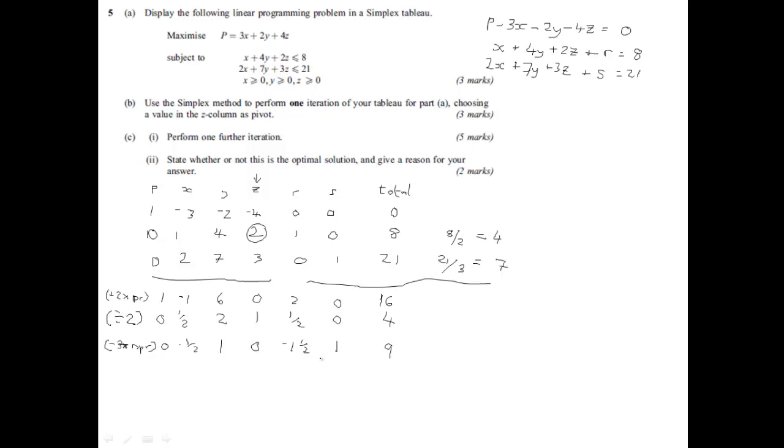So we've now secured 6 marks. It then says perform one further iteration. Well, we can see from looking at the objective function line that we need to do that because we have a negative here in the x column. So that means that we have to perform another iteration using the x column. It's the only negative value in the objective function line. We do the same as we did previously. We divide. So 4 divided by 1.5 is 8. And then 9 divided by 1.5 is 18. So it's this value here that we use as our pivot value.